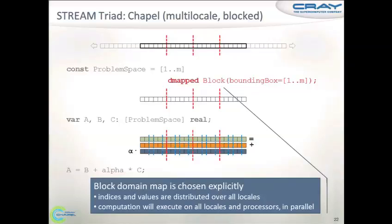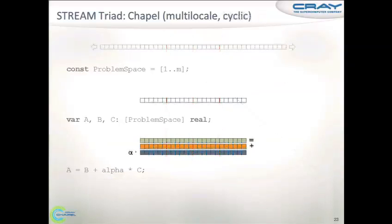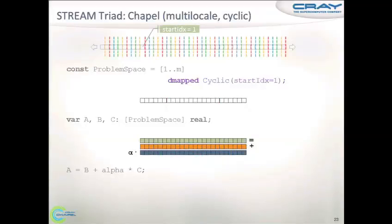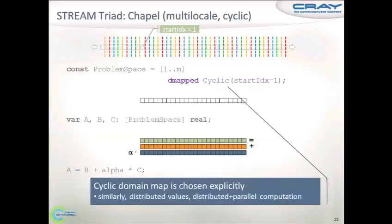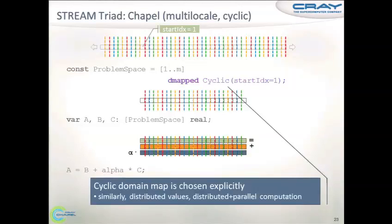Likewise, if instead of the block domain map you plug in the cyclic domain map, you get your arrays distributed in a cyclic fashion, and the computation on each locale will again run in parallel.